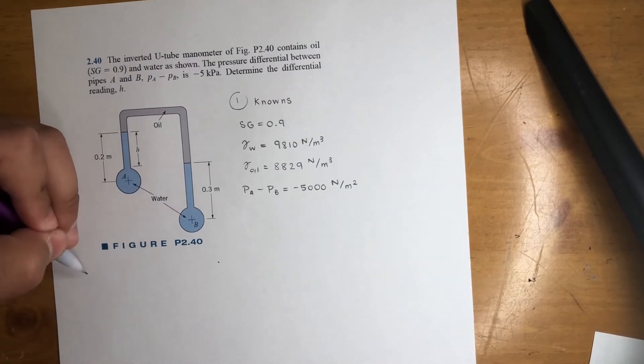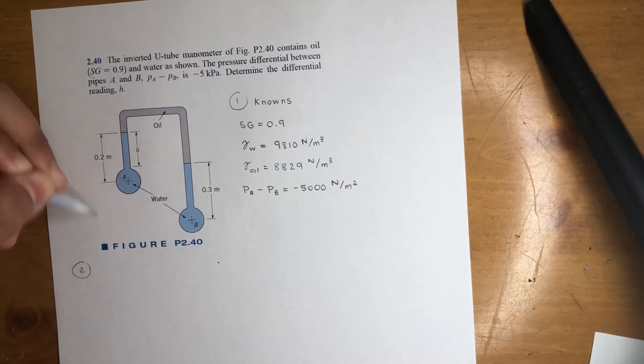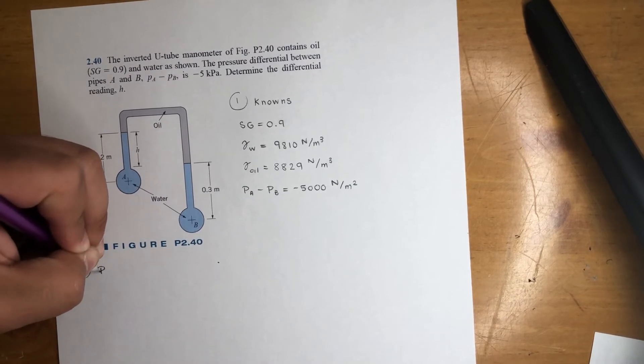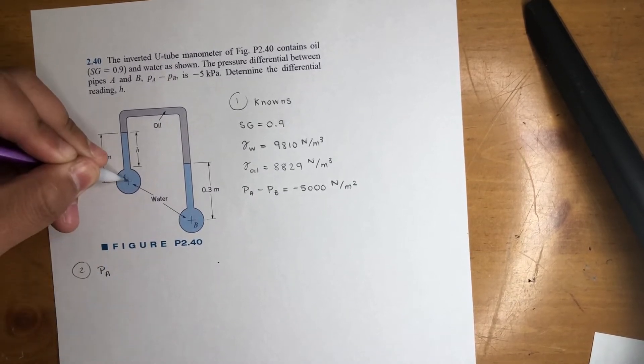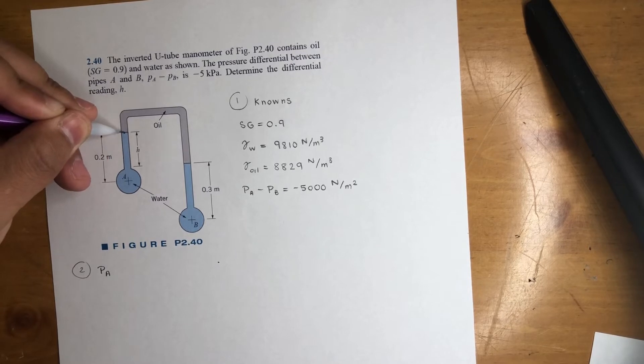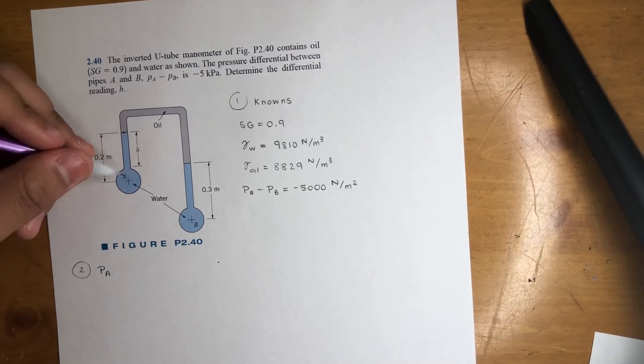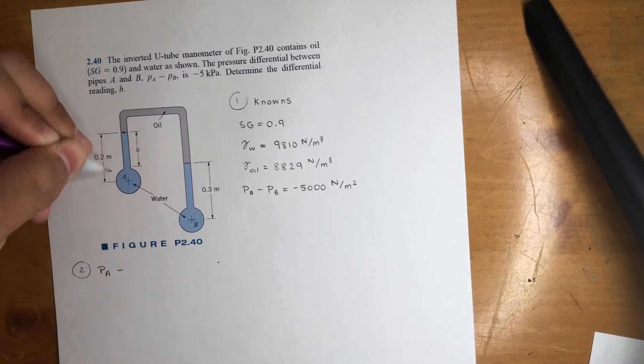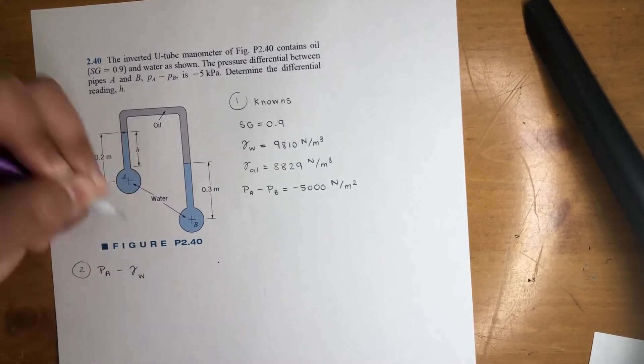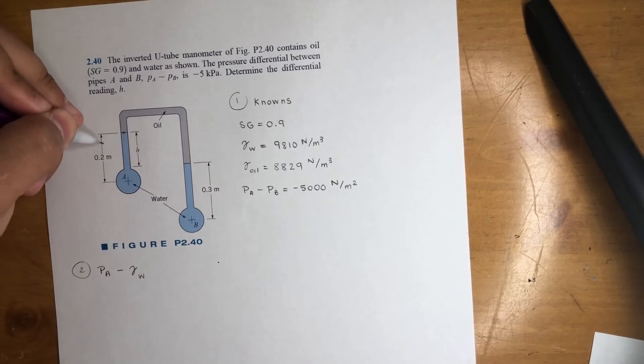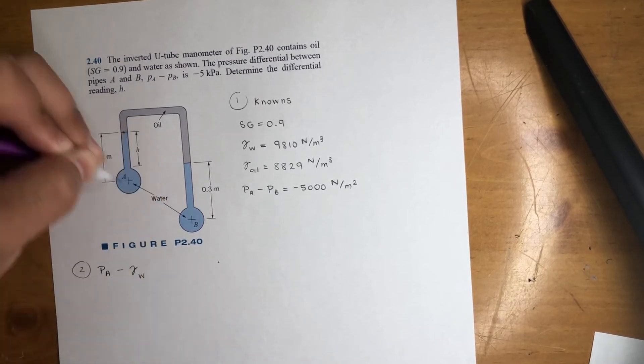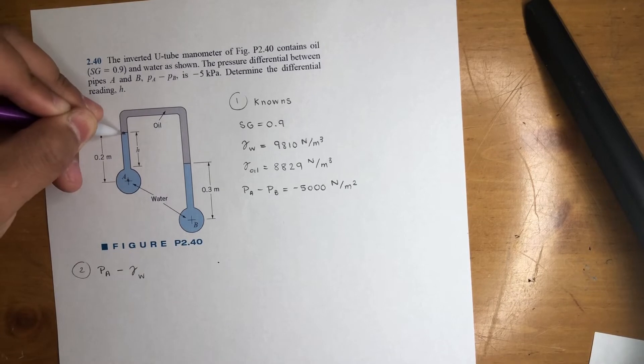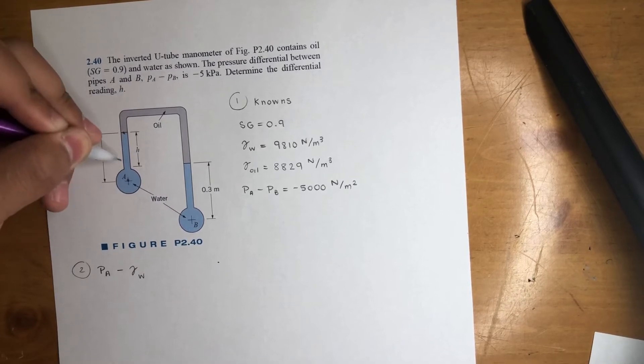Let's move on to step two, the equation. So let's start at A, let's end at point B and see where that goes. So pressure at A. We go up until this point right here. So that distance, we're going up, so that's a negative. We're dealing with water. So let's put gamma of water times 0.2 because we're going from this point to this point, not H. So 0.2.